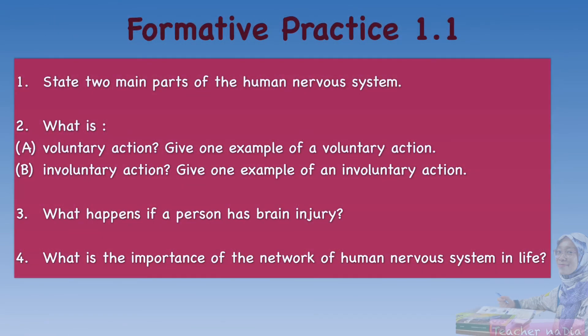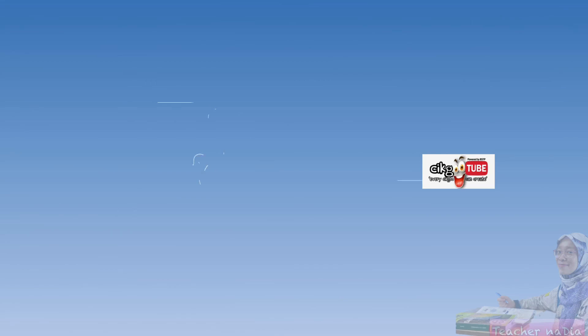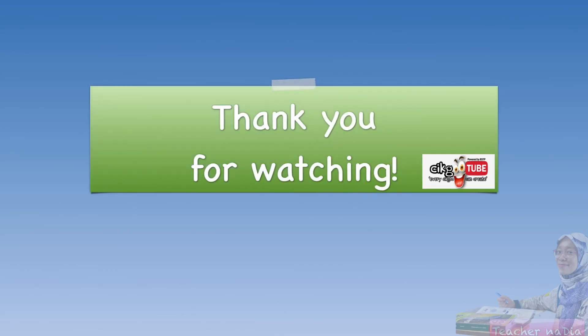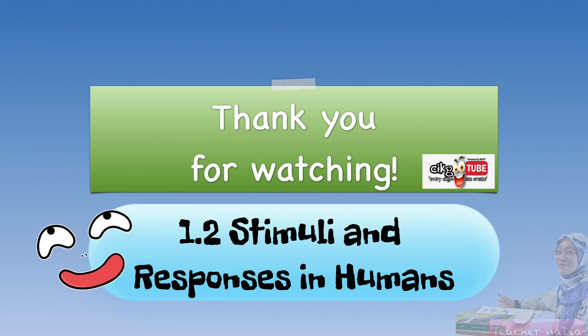We have finished subtopic 1.1. For exercise, answer formative practice 1.1 in your textbook. You can find the answers from the textbook and also from this video. After you have completed your exercise, you can hand it in to our Google Classroom. If you have any questions, you can ask me or ask your friends, and we can discuss it in our WhatsApp group. Thank you for watching. Hopefully this video has helped you understand the human nervous system. Don't forget to read about the next subtopic, Stimuli and Responses in Humans. Bye! Assalamualaikum.